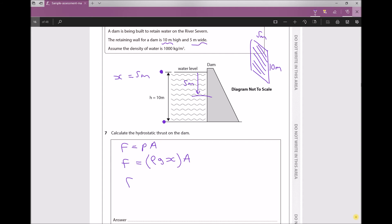So the force, or the hydrostatic thrust force, is the density of 1000 times gravity, which is 9.81, times the distance from the free surface to the center, which is 5 meters, and then times our area, which is our height of 10 times our width of 5.